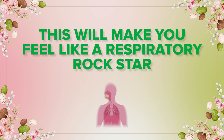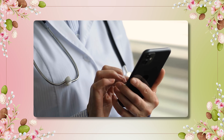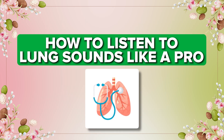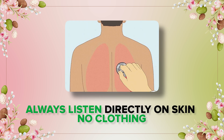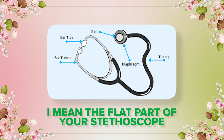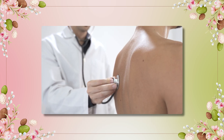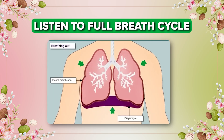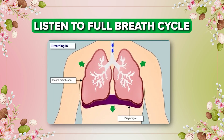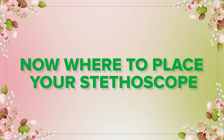Let's dive into how to listen to lung sounds like a pro. First, stethoscope tips: always listen directly on skin — no clothing. Use the diaphragm, the flat part of your stethoscope. The patient should sit up if possible. Compare side to side, not just up and down, and listen to the full breath cycle — both inhalation and exhalation.